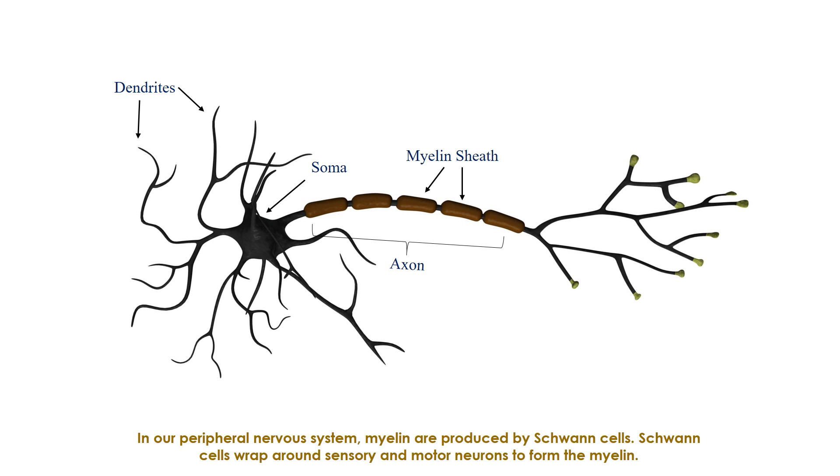In our peripheral nervous system, myelin are produced by Schwann cells. Schwann cells wrap around sensory motor neurons to form the myelin sheath, which is vital for the nervous system to function properly, particularly the central nervous system.